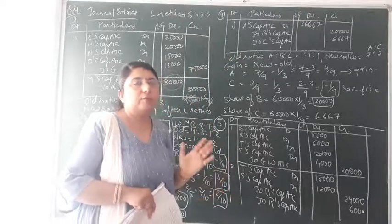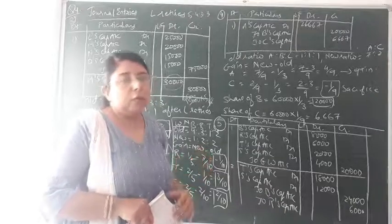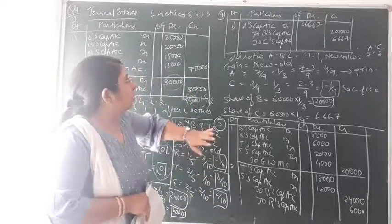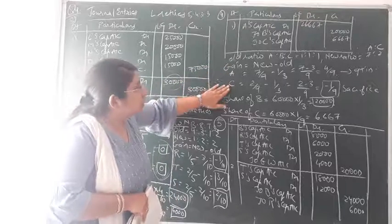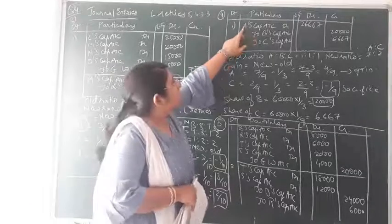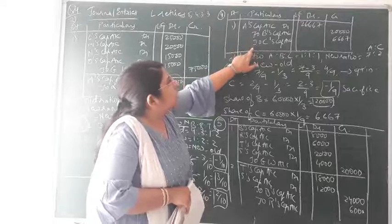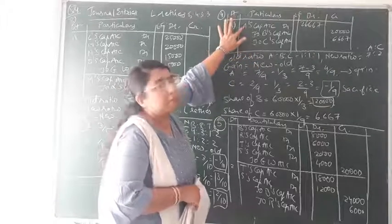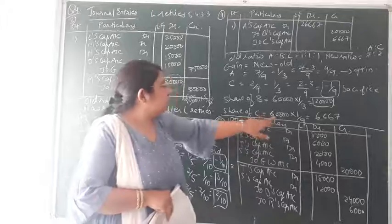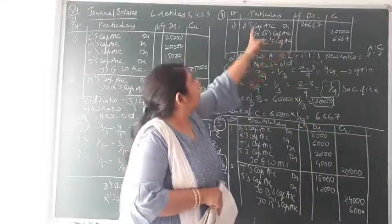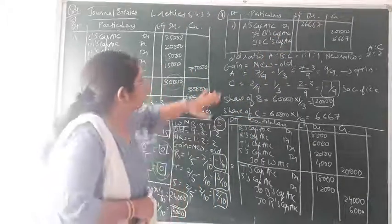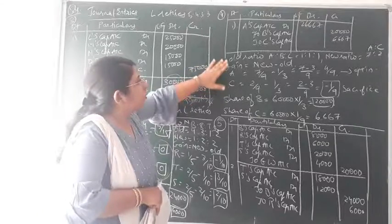Since old goodwill is not given in this question — only the new goodwill after retirement of partner B — there is only one journal entry. The continuing partner gaining is A, and C is also sacrificing in favor of A. So: A's capital account debit Rs. 26,667 to B's capital account credit Rs. 20,000 and to C's capital account credit Rs. 6,667.